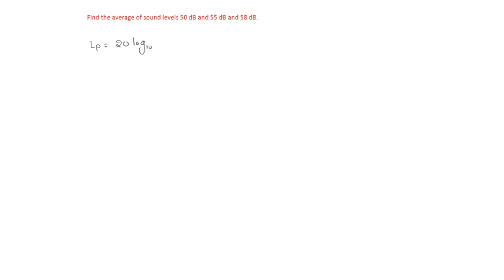Find the average of sound levels 50, 55, and 58 decibels. Average equals 20 log base 10. So here 3 sounds are there, so 1 by 3 into 10 power 50 by 20 plus 10 power 55 by 20 plus 10 power 58 by 20.